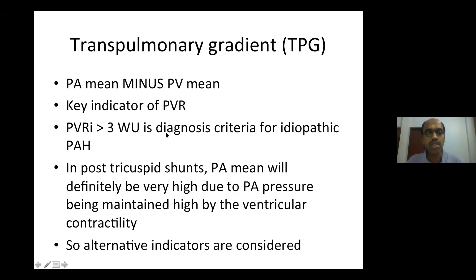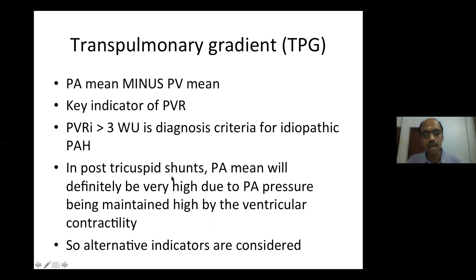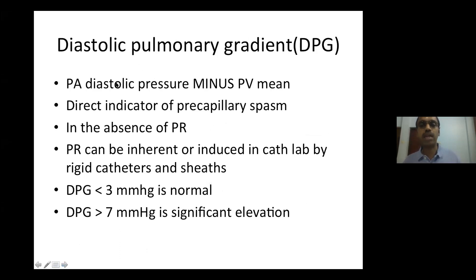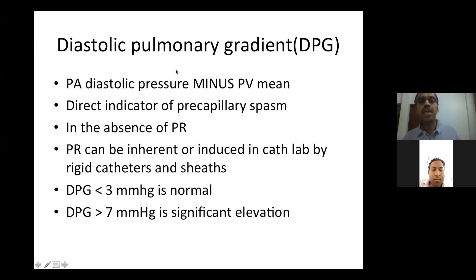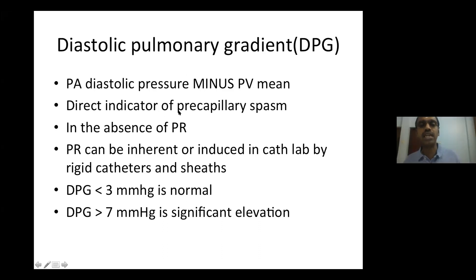PVRI value of more than 3 wood units is the definition for diagnosis of idiopathic PAH. However, we need to remember that in many post-tricuspid shunts, especially large shunts, the PA mean will be substantially high. So the transpulmonary gradient may be quite high in patients having large post-tricuspid shunts, especially in older age groups. Some alternative indicators are being considered, like diastolic pulmonary gradient, which is PA diastolic pressure minus PV mean. PA diastolic pressure is normally equal to PV mean, so if PA diastolic pressure is higher than PV mean, that is a direct indicator of precapillary arteriolar spasm or disease.